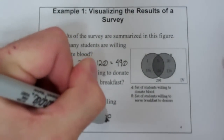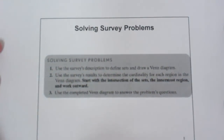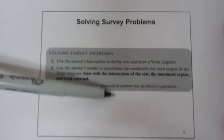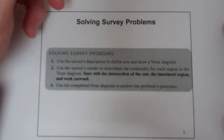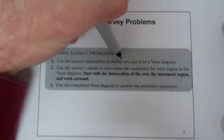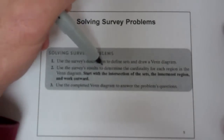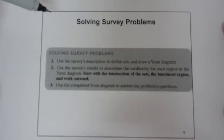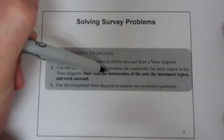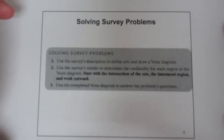A Venn diagram makes it very easy to visualize the results of a survey and figure out percentages or the number of participants willing to do certain activities or have certain opinions. So what's the methodology for solving a survey problem? You're going to use the survey's description to define sets and draw a Venn diagram. Labels are really important here. You're going to use the survey's results to determine the cardinality for each region in the Venn diagram, starting with the intersection of the sets — the innermost region — and working outward.